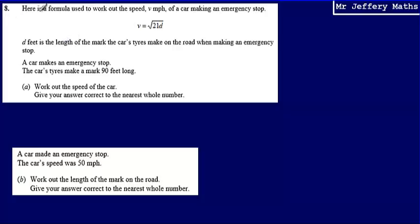This is question 8. Here we're given a formula used to work out the speed v in miles per hour of a car making an emergency stop. We're told that d feet is the length of the mark the car's tires make on the road when making an emergency stop.